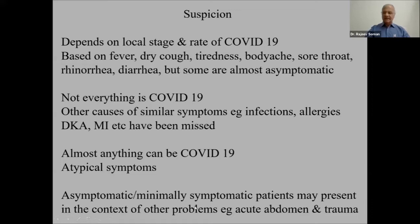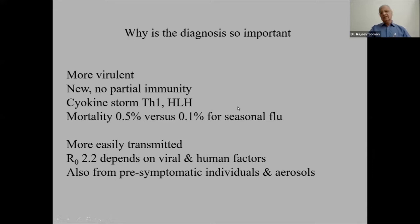Asymptomatic or minimally symptomatic patients may present in the context of other problems such as acute abdomen or trauma. A patient presenting with acute abdomen may not have obvious COVID symptoms; the whole clinical approach focuses on the abdomen or polytrauma. Nobody asks about cough or upper respiratory symptoms, so the patient undergoes surgery, is admitted, and a few days later develops manifestations of COVID-19. This is an important scenario to remember.